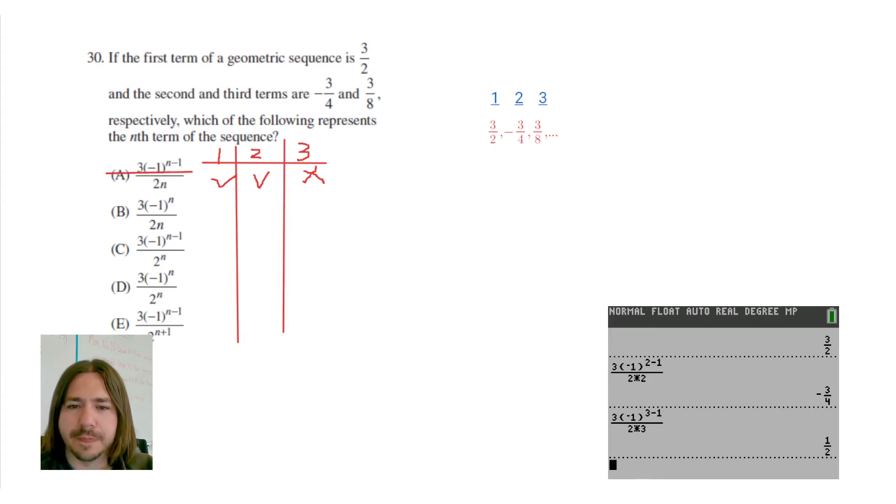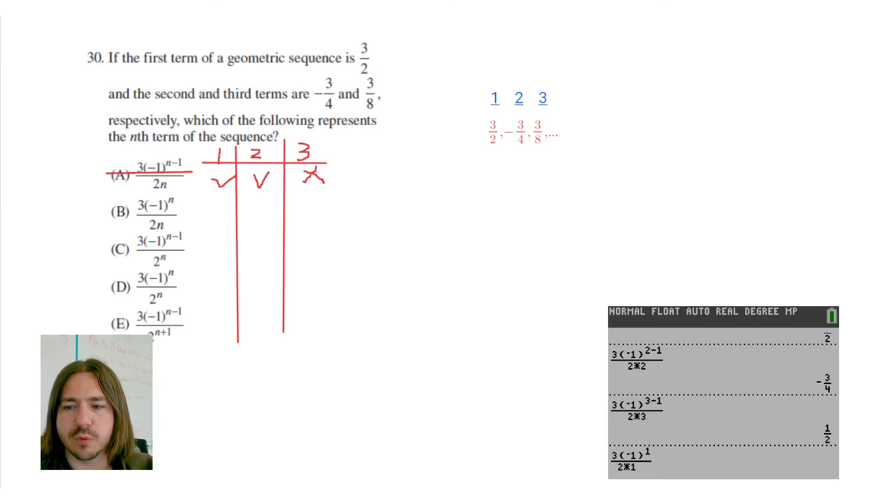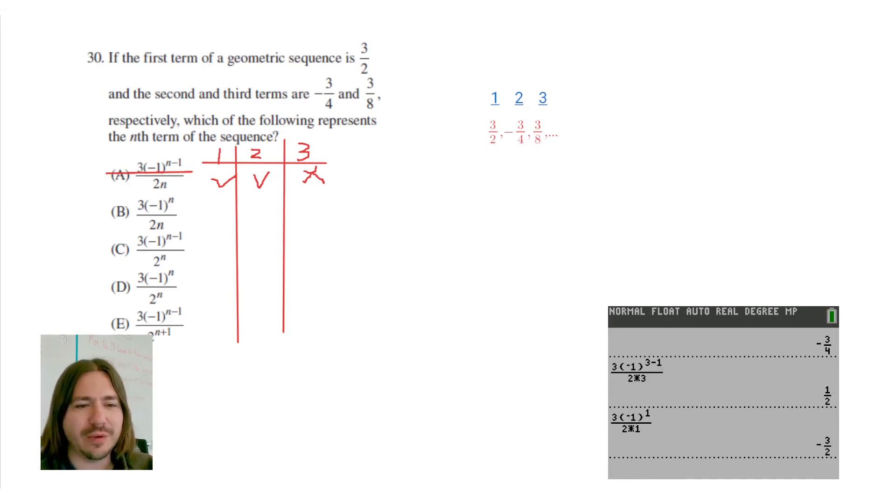Let's try B. So with B, the sequence is very similar, but I guess a little bit different here. We've got 3 times negative 1. And then the exponent is just n instead of being n minus 1. So I'm going to start with 1 and then over 2 times n. So 2 times 1. And that starts off with a negative 3 halves. Okay. So, well, I guess the silver lining here is we don't have to try 2 or 3 because we already know that 1 doesn't work. So it can't be B. All right. So we move on to C.